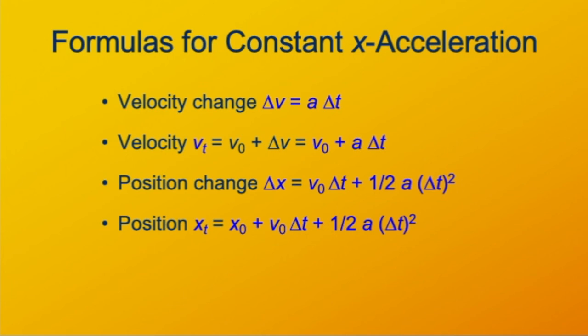The formula for instantaneous position has three terms, the constant term of initial position, plus the linear and quadratic terms of the trapezoid in the velocity-time graph. Now, these four formulas are everything that we need to fully characterize constant acceleration motion.